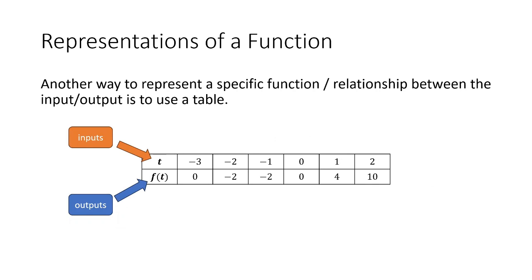You can also represent functions using tables. A table shows explicitly a collection of inputs and their associated outputs. For example, an input of negative three is associated with an output of zero; an input of negative two is associated with an output of negative two; an input of negative one is associated with an output of negative two, and so on. So a table is another way to represent a function.